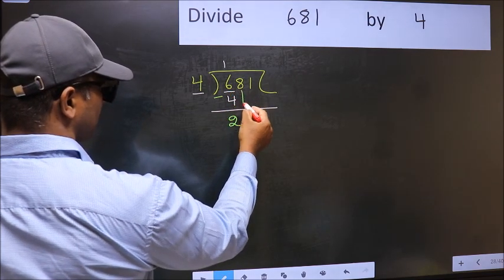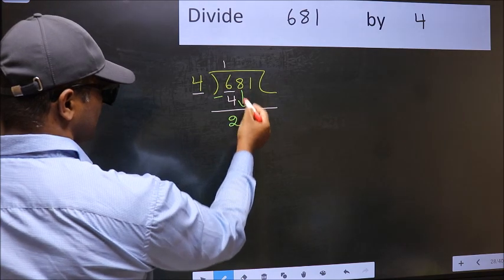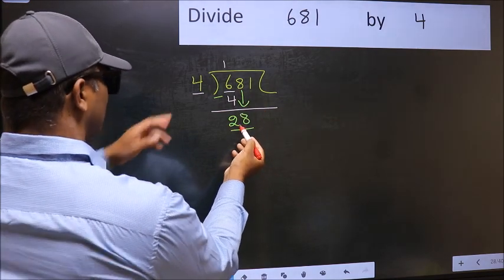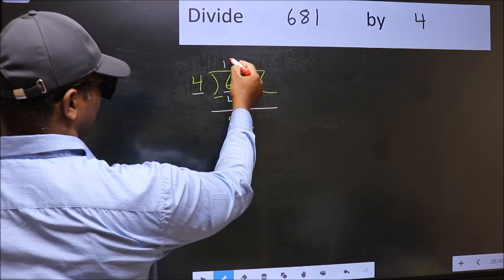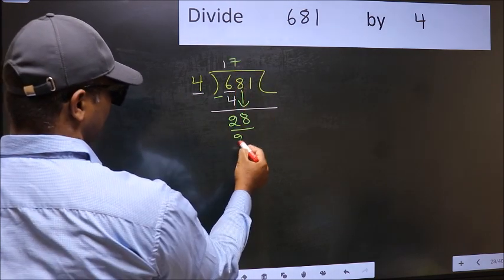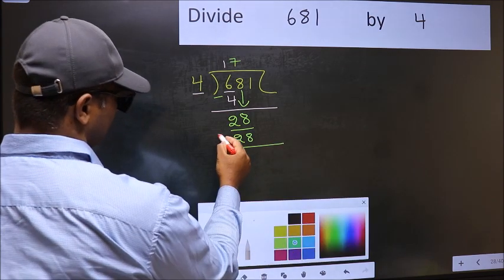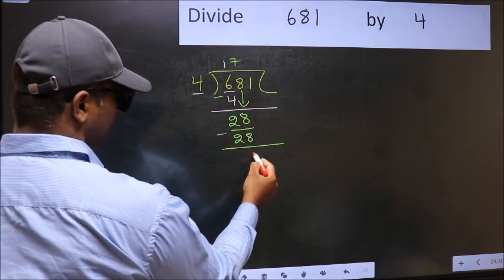After this, bring down the beside number. So 8 down. Now 28. When do we get 28 in 4 table? 4 7's 28. Now you should subtract. 28 minus 28, 0.